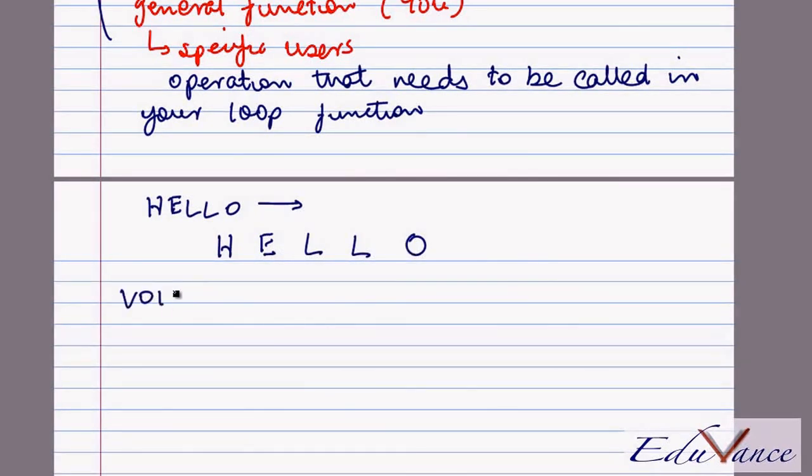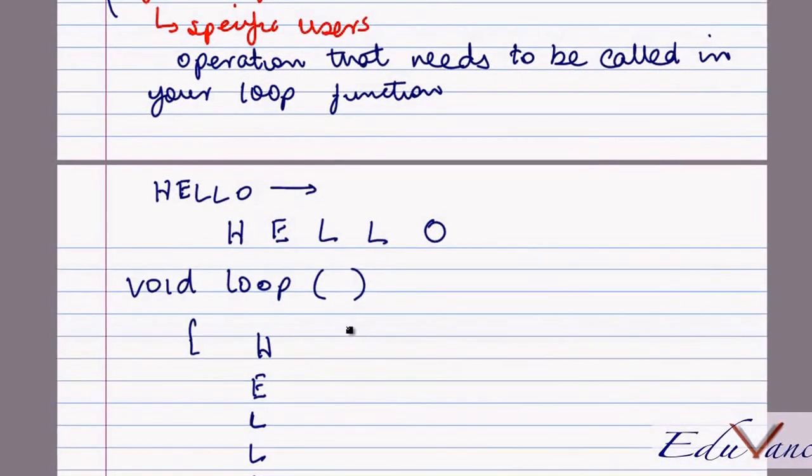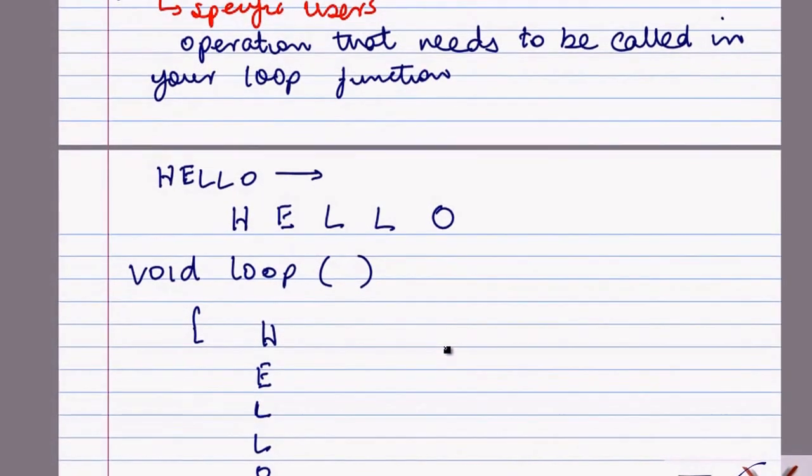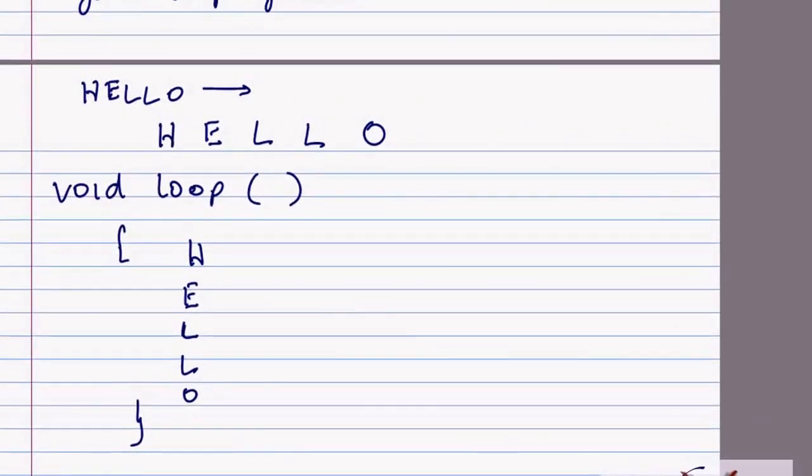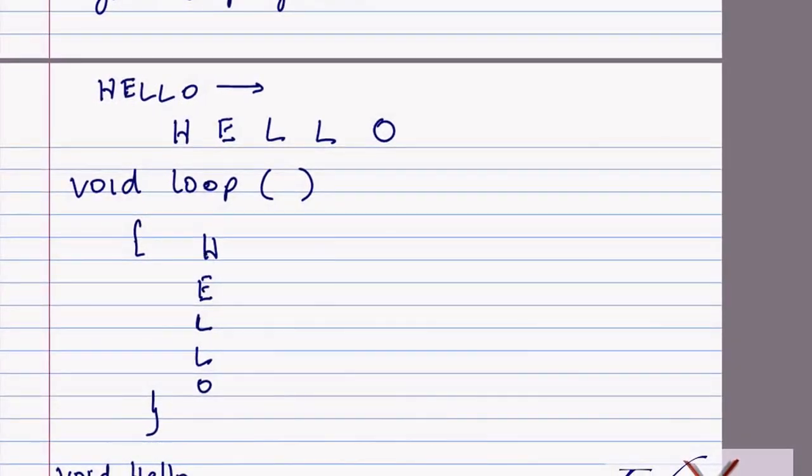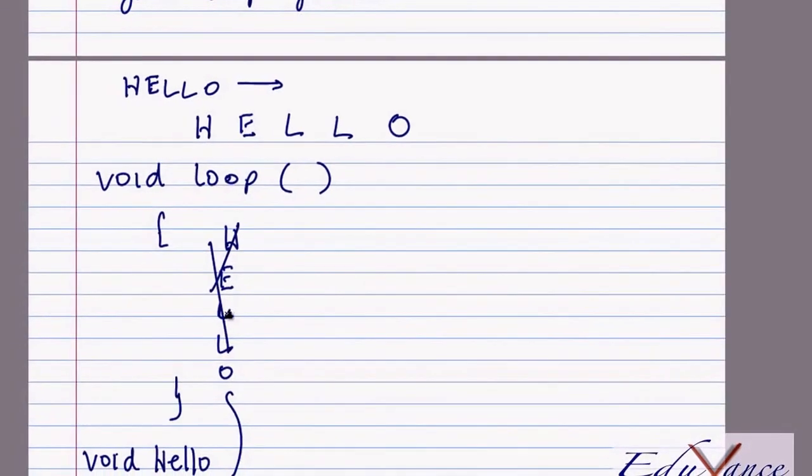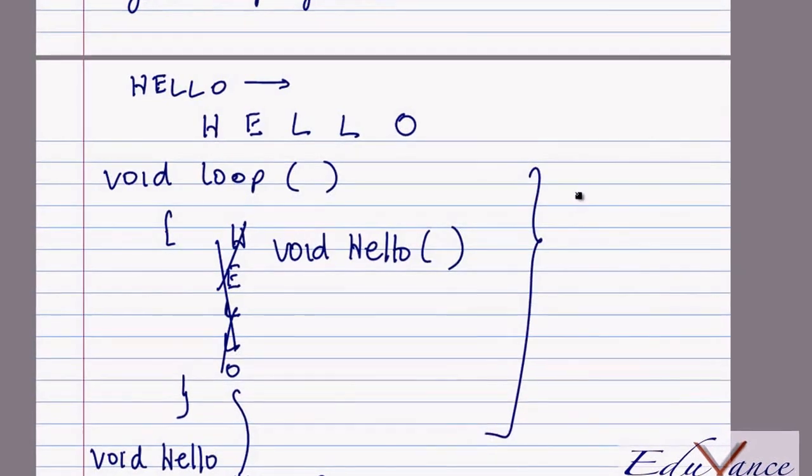I could do that in my void loop, such that I do H, then E, then L, then L, then O. But that would make my program very long. Rather, I would make a function called hello and do the display part here rather than here and just call the function here. We will see these examples as part of future lectures.